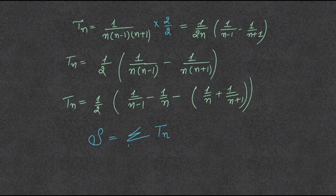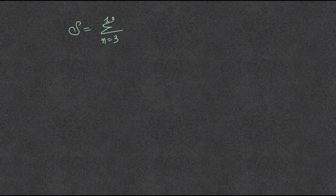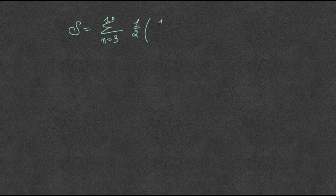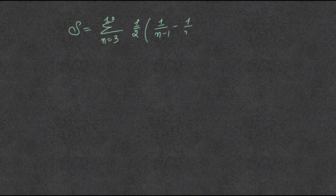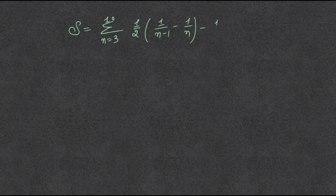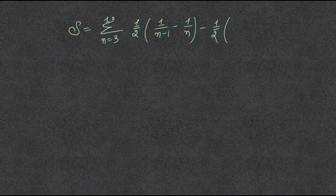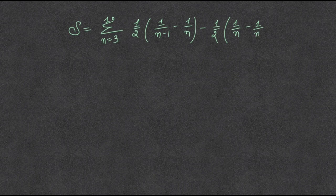Since we know that the sum of the sequence is summation of all the terms, and here the value of n starts from 3 to 10. 1 by 2 upon 1 upon n minus 1 minus 1 upon n minus 1 upon 2, 1 upon n minus 1 upon n plus 1.